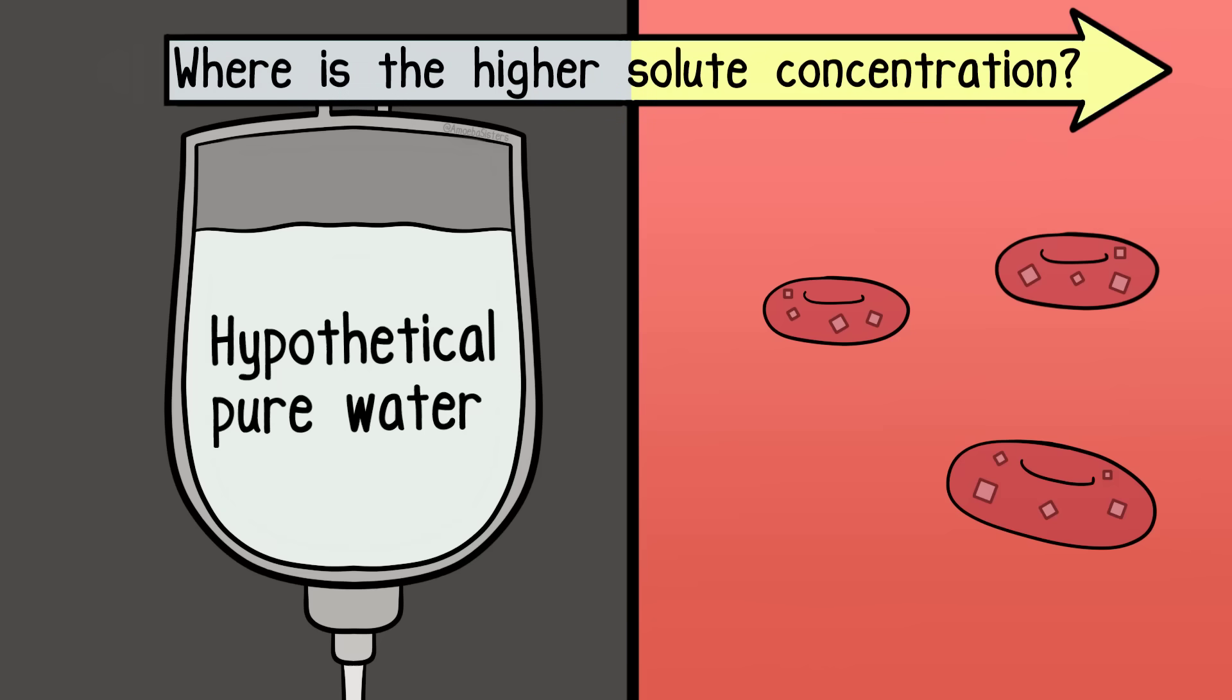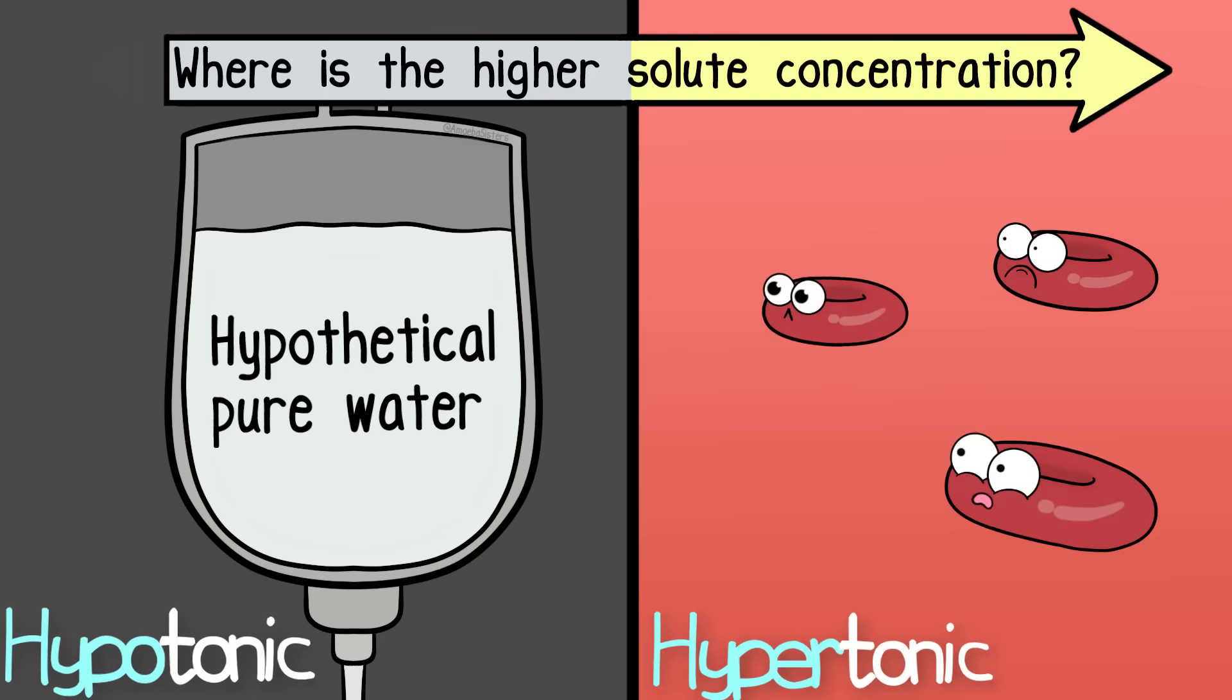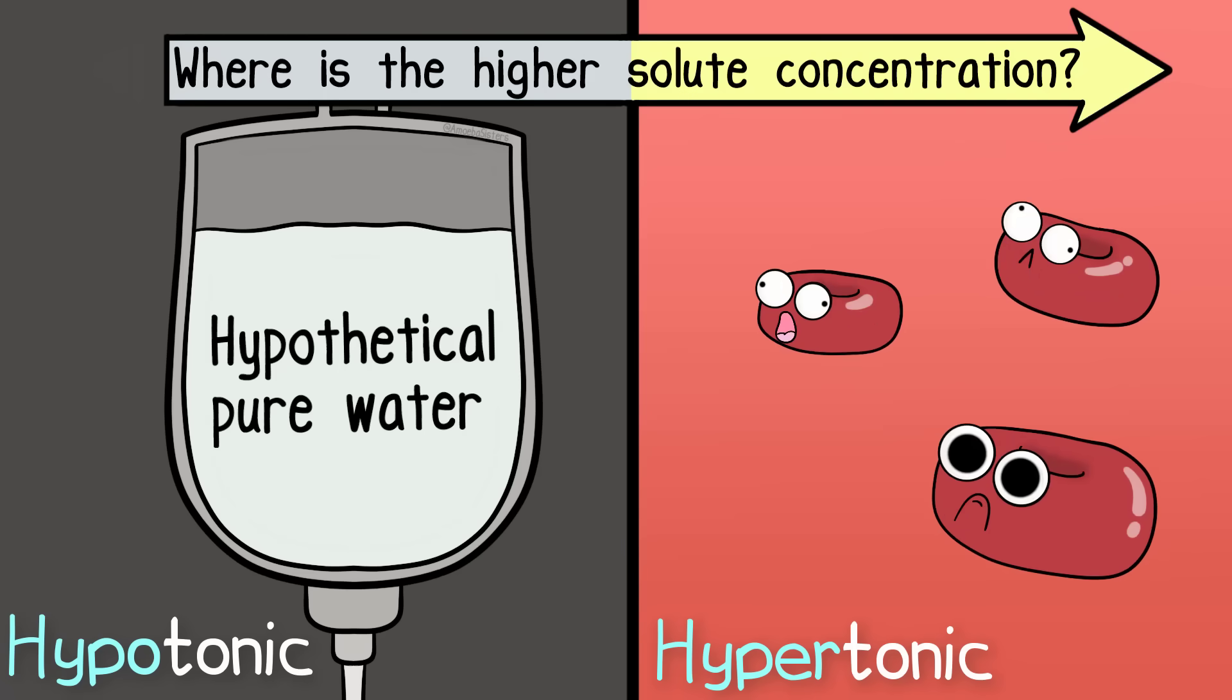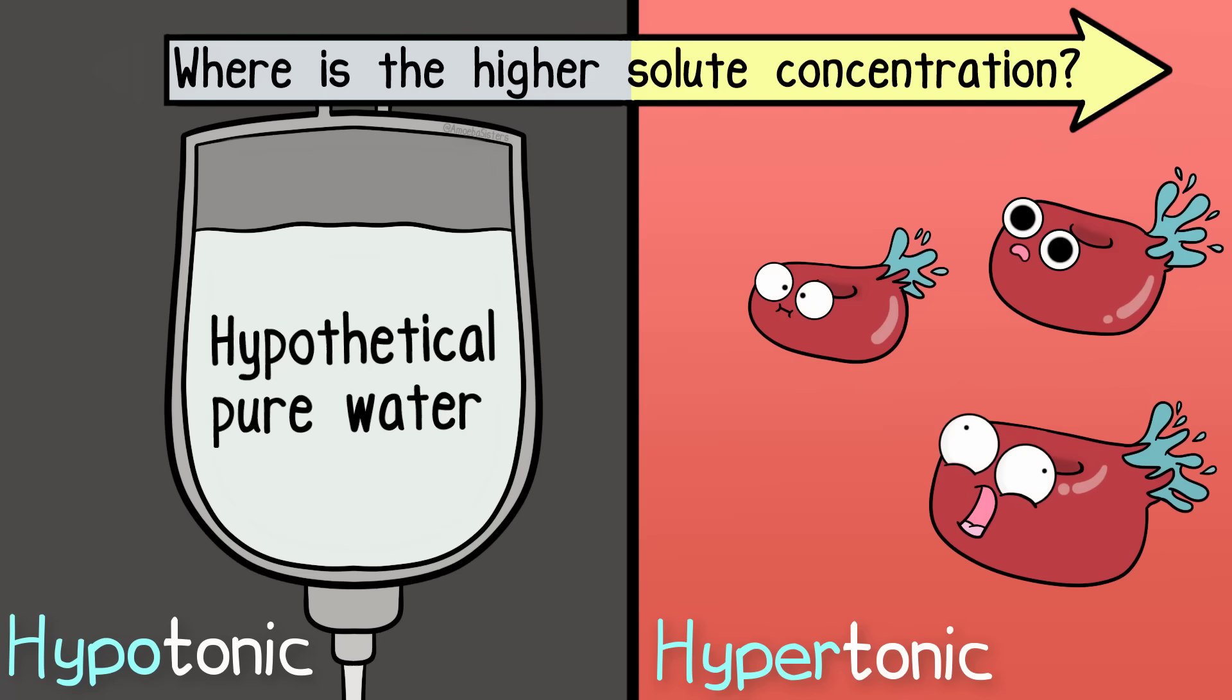It goes to the area of higher solute concentration, which in this case is inside the cells. The cells are hypertonic compared to the pure water in the IV tube because the cells have a greater solute concentration. The cells would swell and possibly burst. Exploding red blood cells are not good.